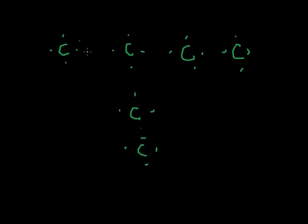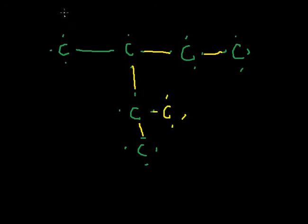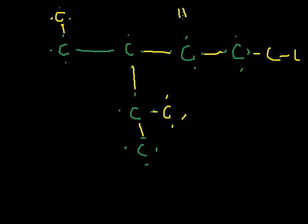What is going to happen is the electron of one carbon is going to form a covalent bond with the electron of another carbon. Similarly, this electron will bond here, and this electron will bond with another electron of carbon. You can add more carbons — each with four valence electrons — and they will continue to bond, forming a long chain. The remaining electrons can bond with hydrogen since hydrogen's valency is one. In this way, carbon forms the longest chain, also known as self-linking, or catenation.